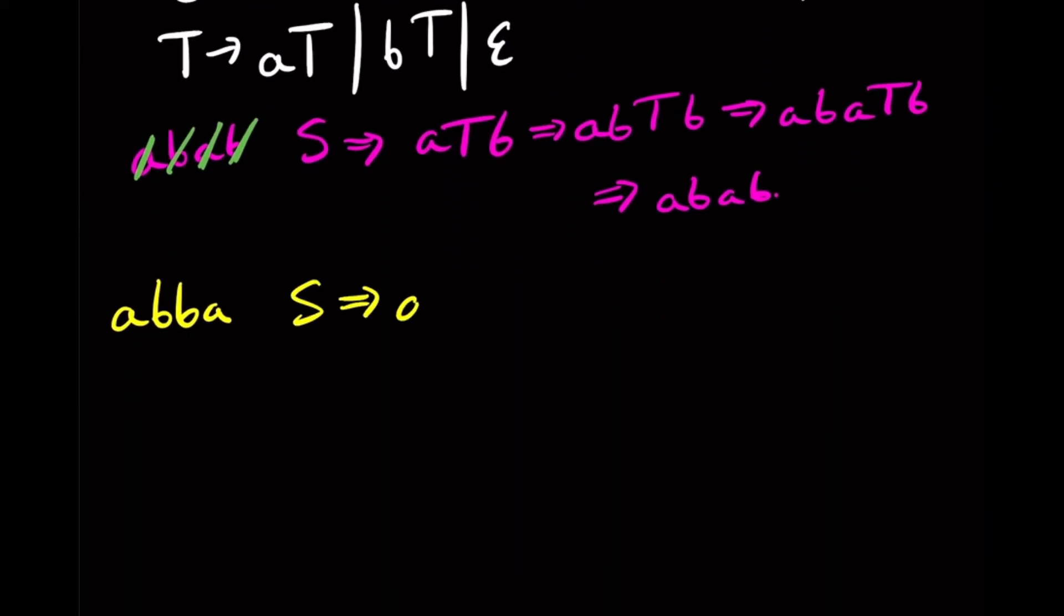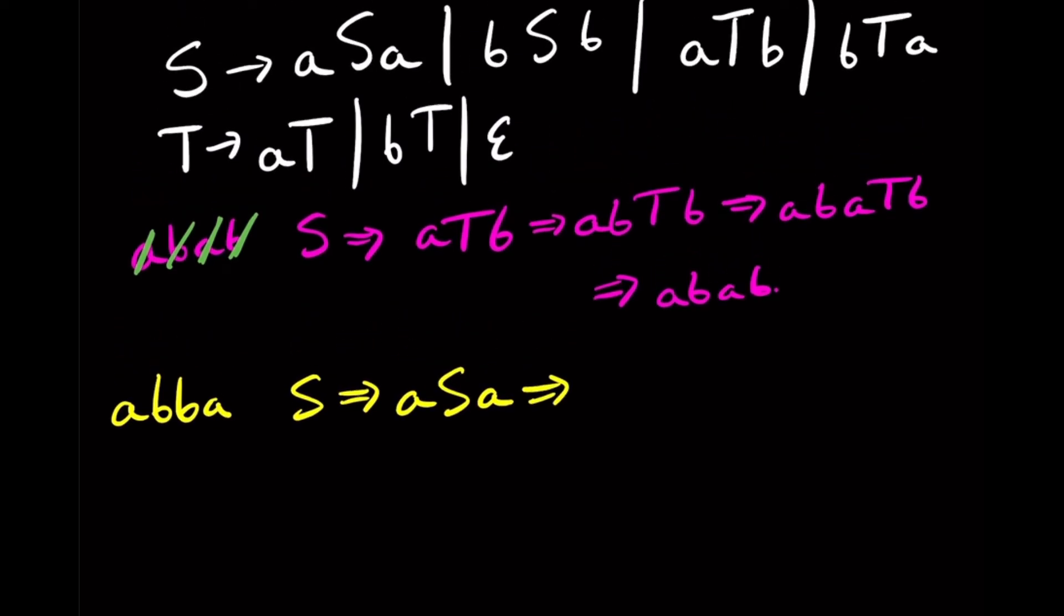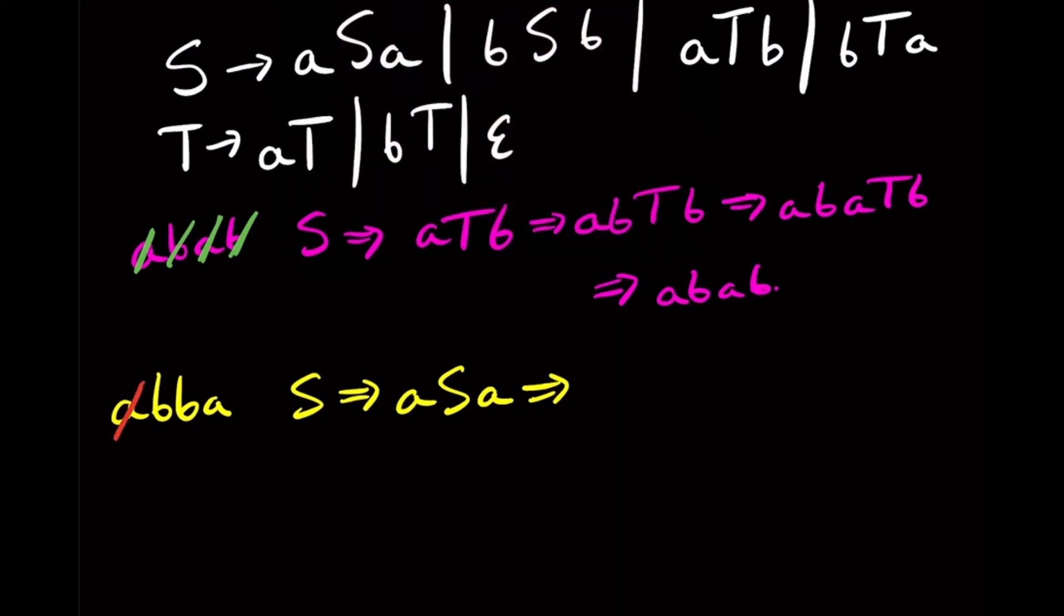S goes to A S A. Then, so that means we have killed off the A at the front, A at the end. Then we have to apply this second rule right here, because that's the only thing that involves two Bs, starting and ending with a B of the things we haven't matched yet.